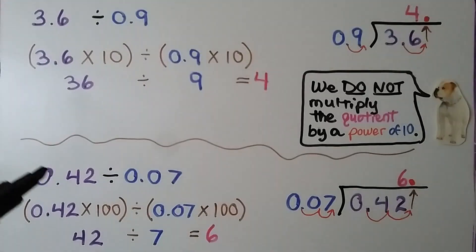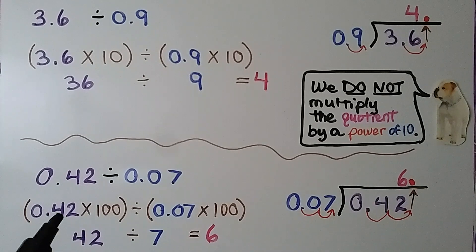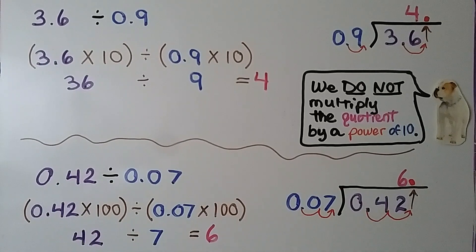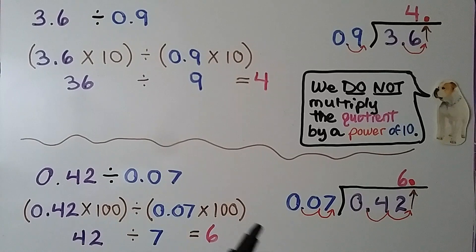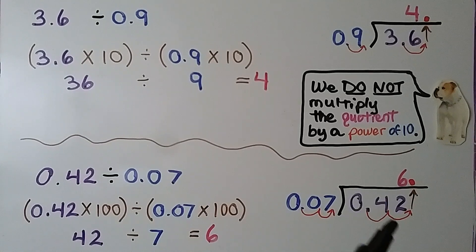Here we have 42 hundredths divided by 7 hundredths. We can multiply 42 hundredths times 100 to make it 42, and multiply 7 hundredths times 100 to make it 7. 42 divided by 7 is equal to 6, so our quotient is 6. By multiplying the divisor and dividend by 100, we move the decimal point two hops to the right — the divisor became a 7 and the dividend became a 42.